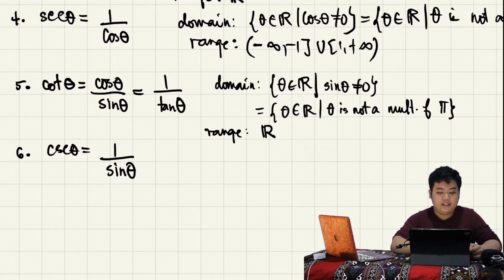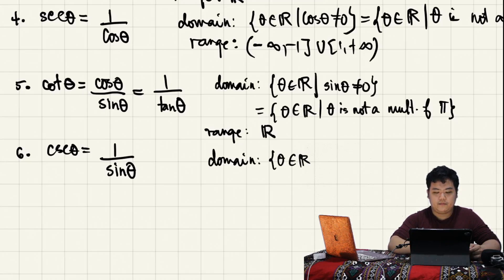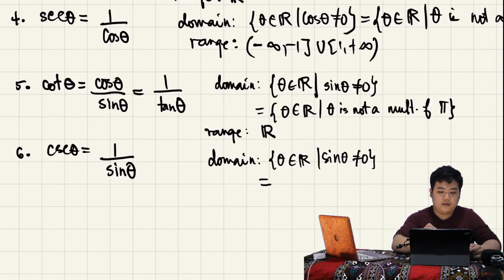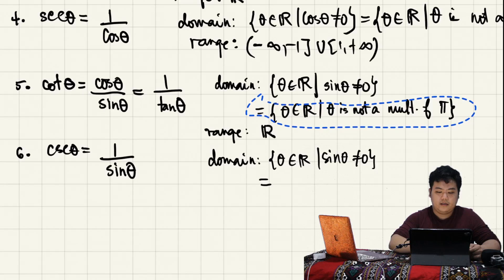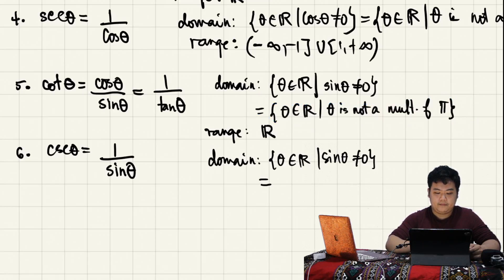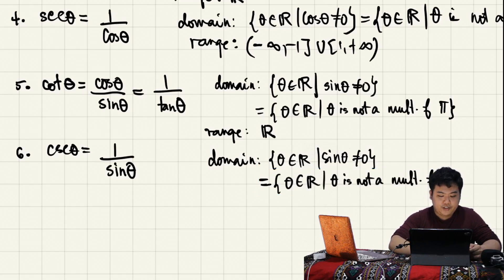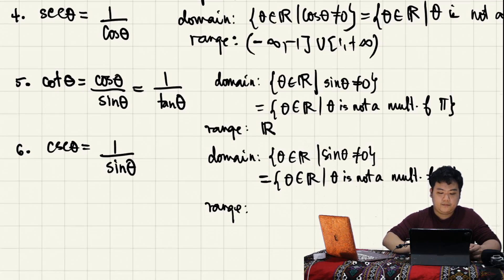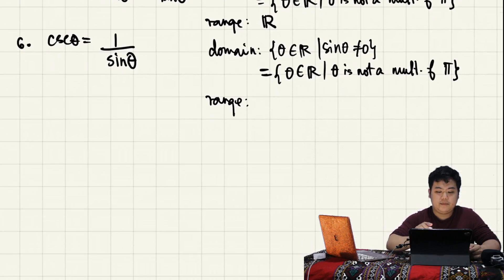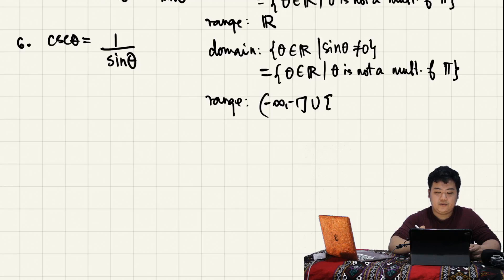Cosecant has the same domain as cotangent — theta must not be a multiple of pi. And the range of cosecant is the same as that of secant theta: negative infinity to negative 1 union 1 to positive infinity.